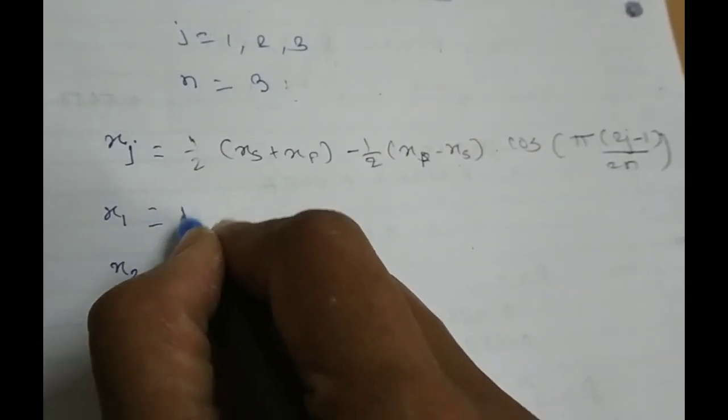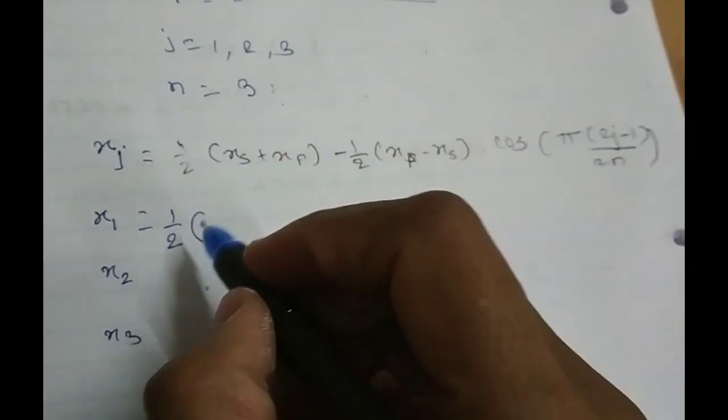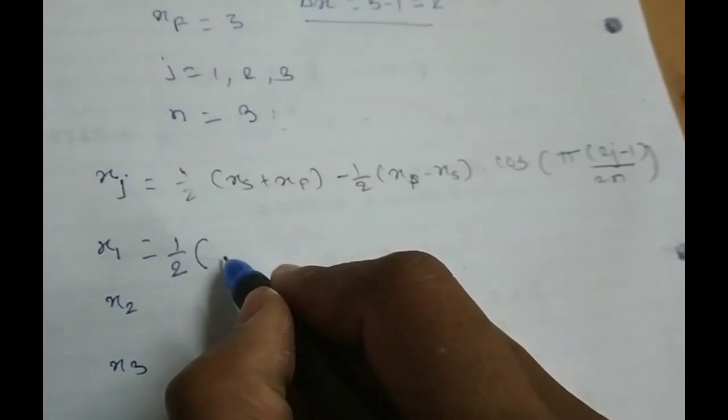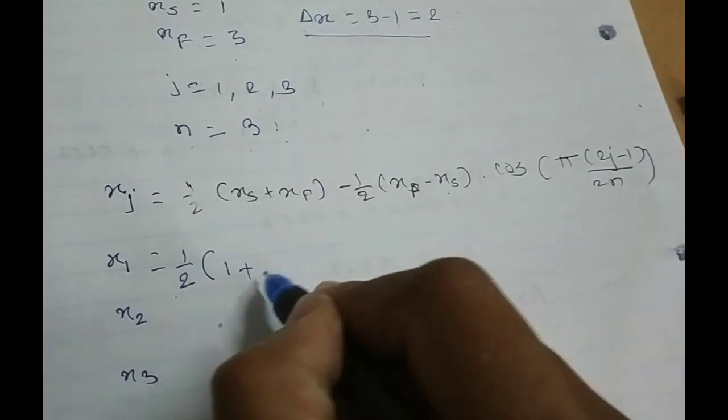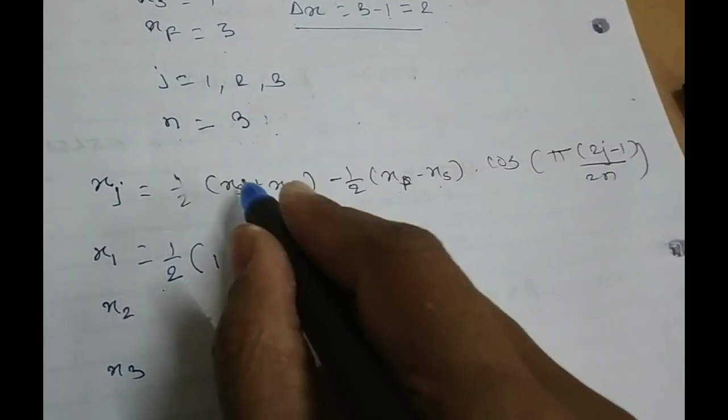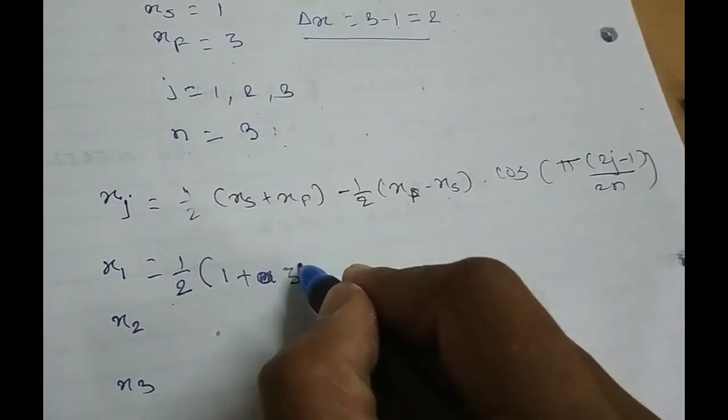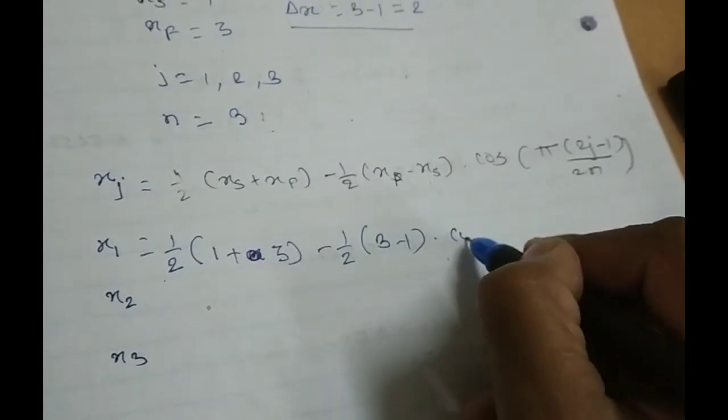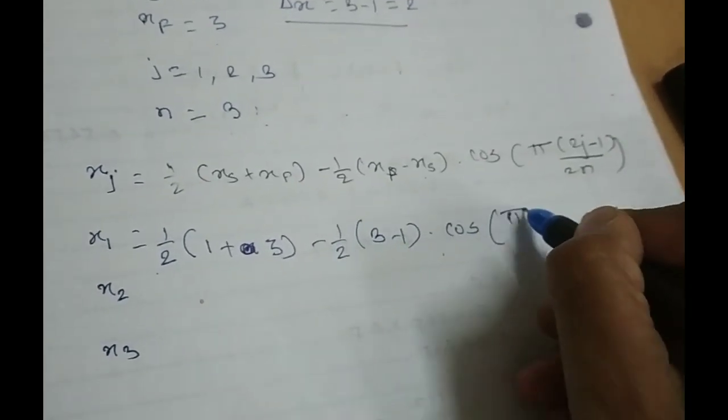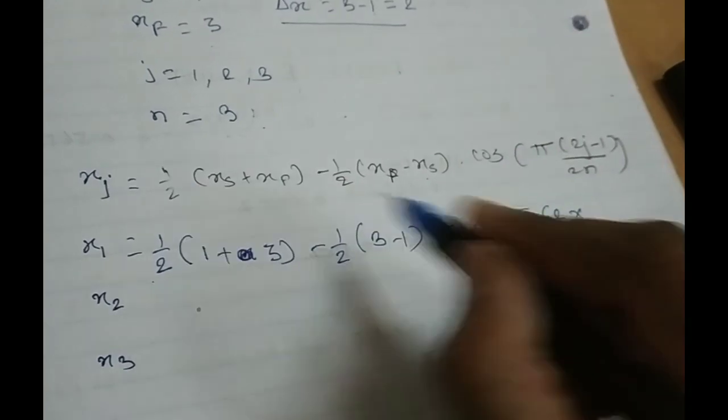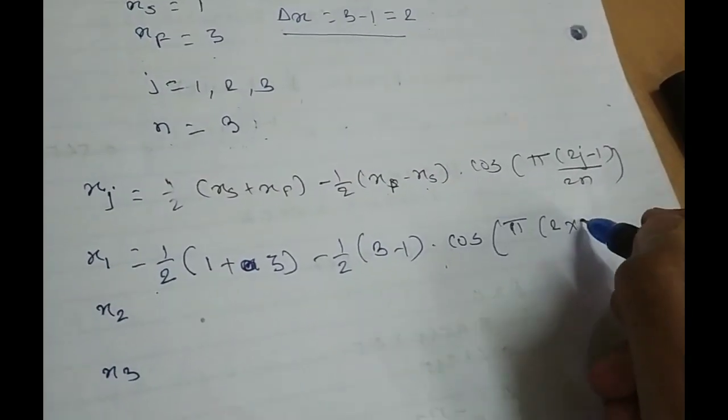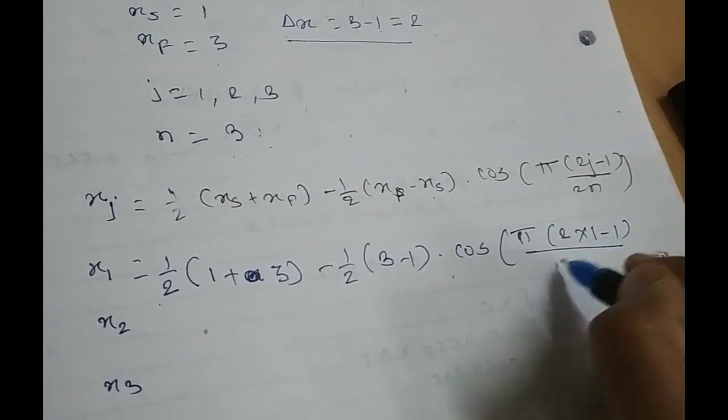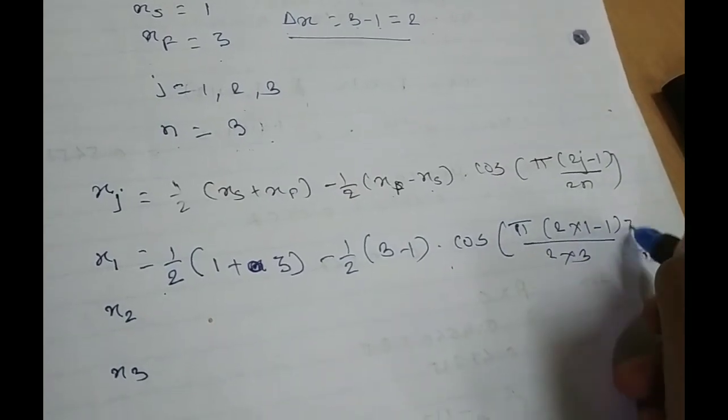So, for x1 what does it be? 1/2 xf so let me put the value. It is 1. Sorry xs is 1. xf is 3 minus 1/2(3 minus 1) into cos of (pi(2j is now 1 minus 1) divided by 2 into 3). n is 3.